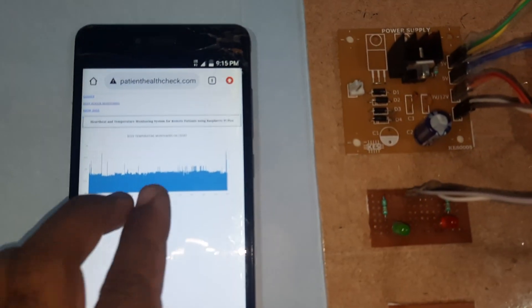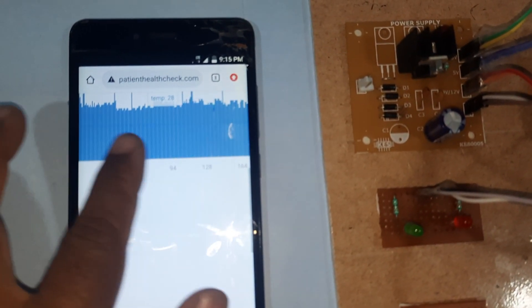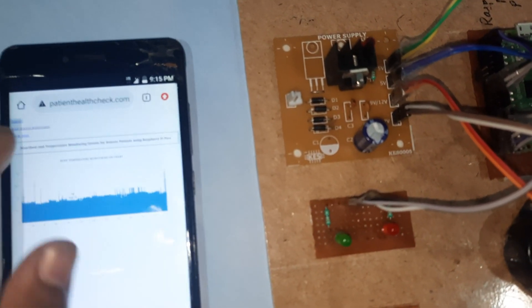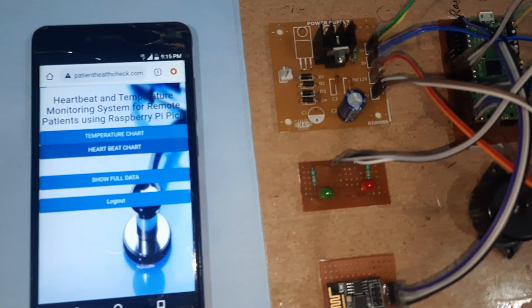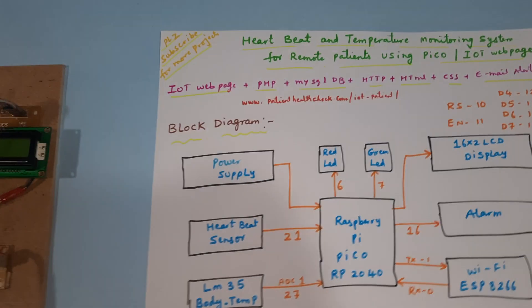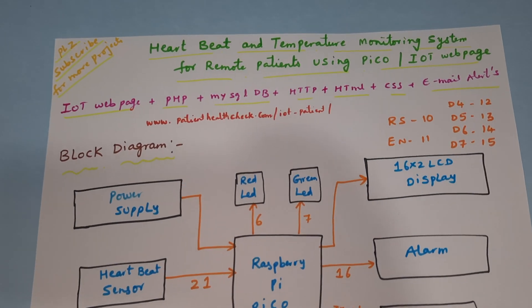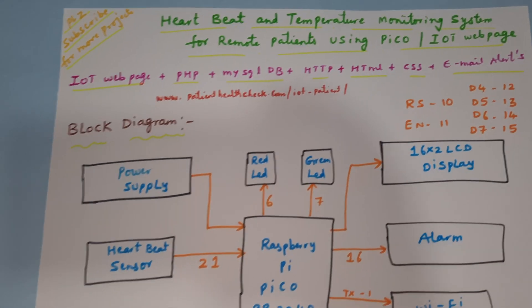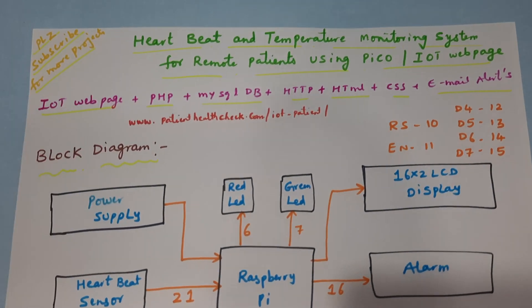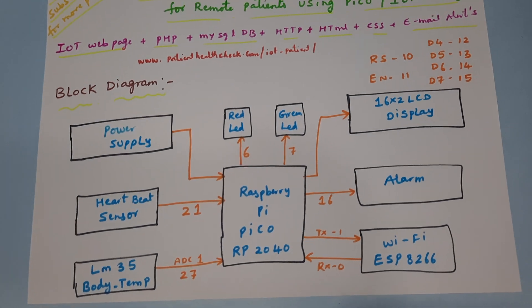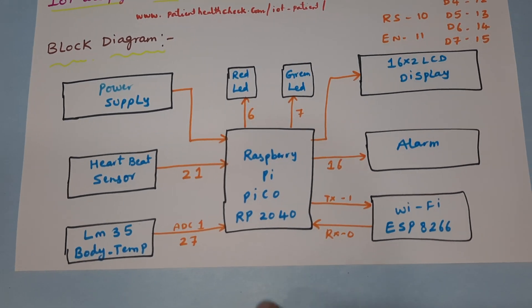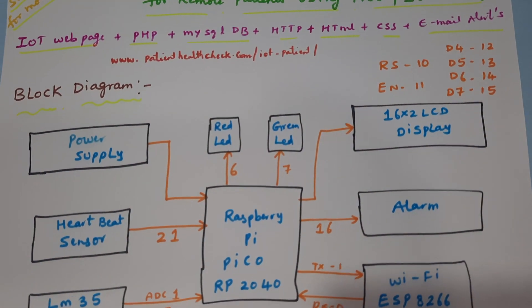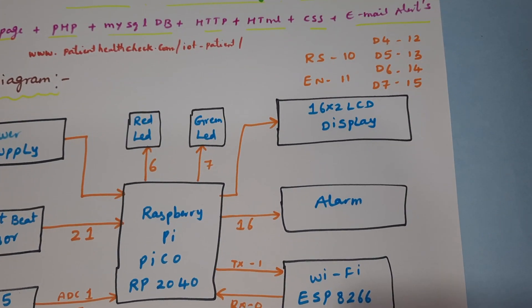It will work over mobile internet. This is the data of temperature, and we can monitor the heartbeat data also. Coming into the block diagram — this is the Patient Health, Heartbeat and Temperature Monitoring System for Remote Patients using Raspberry Pi Pico. Here we are using a 5-volt power supply module.